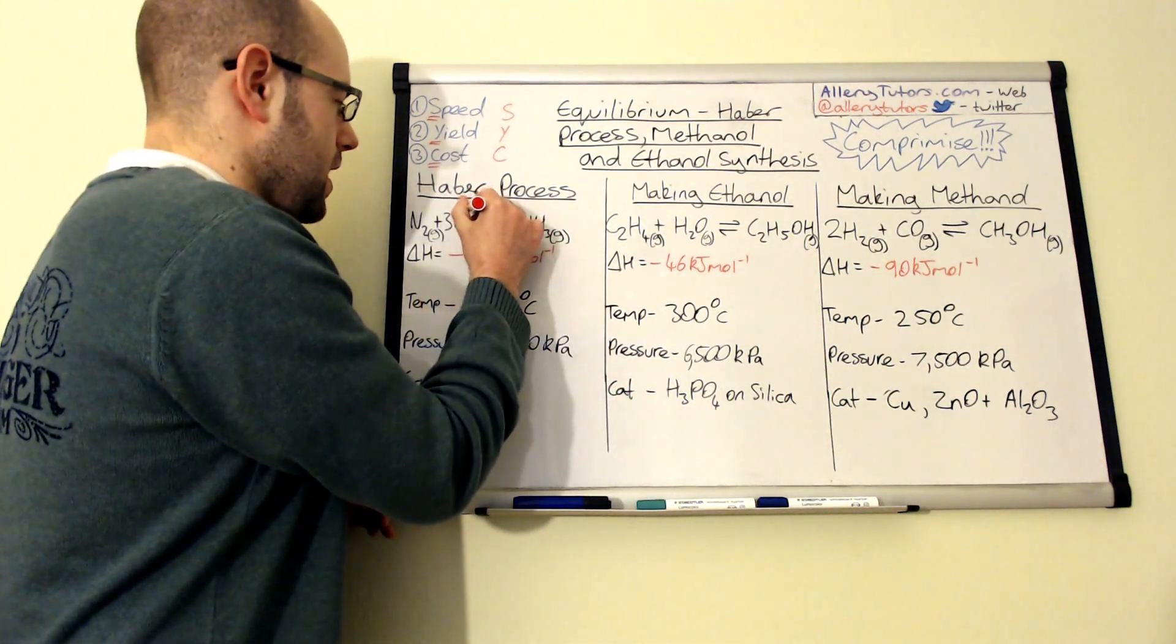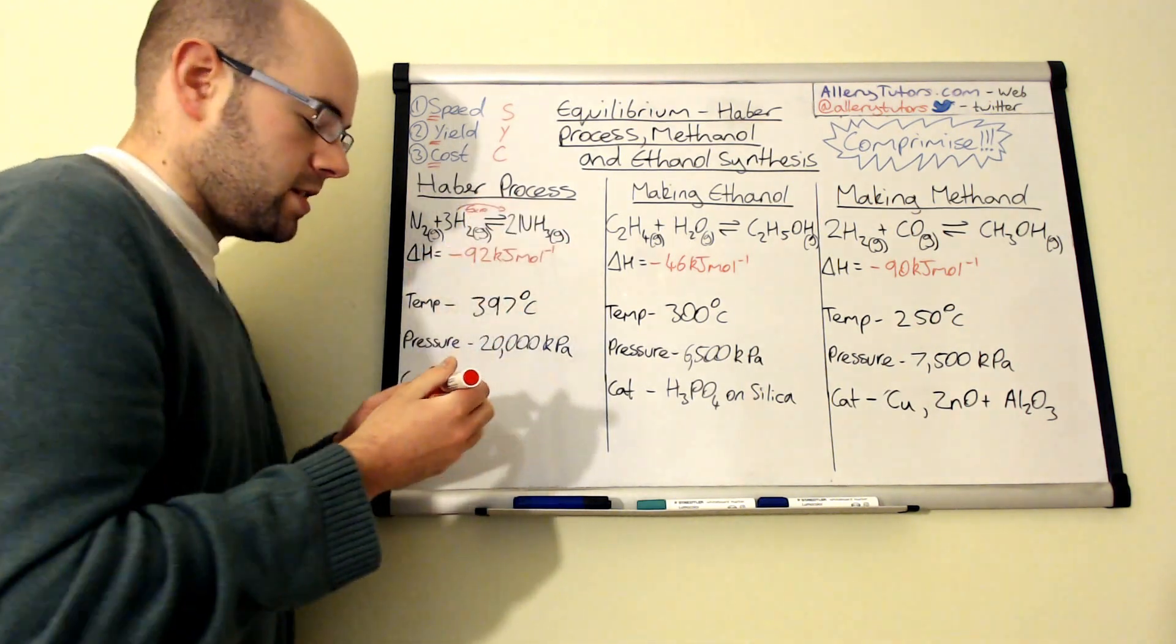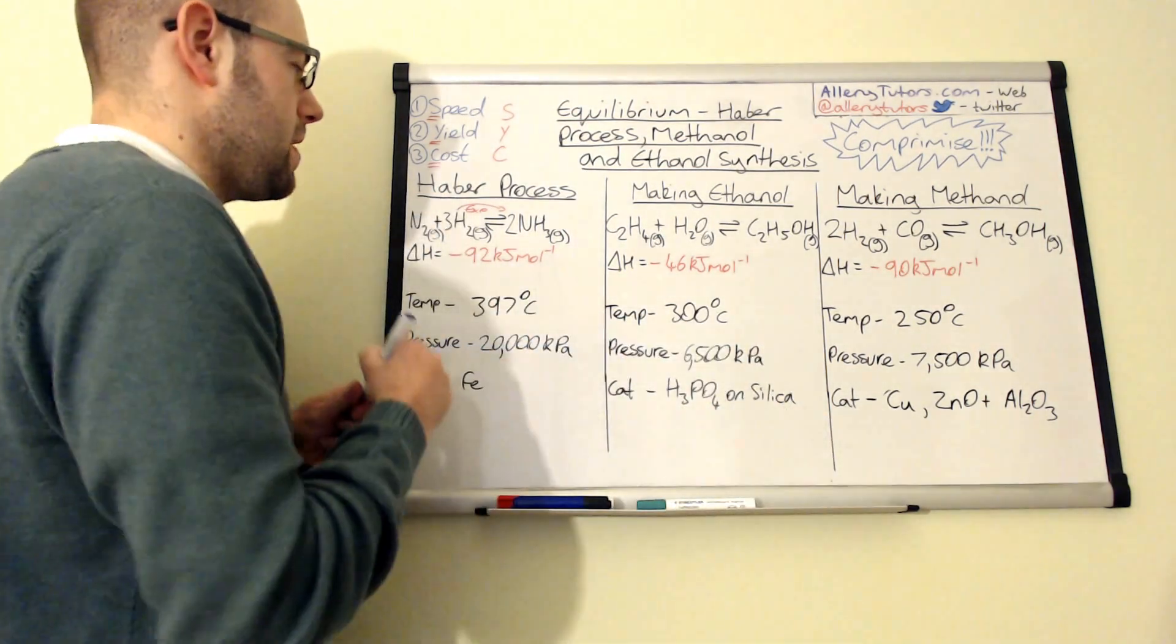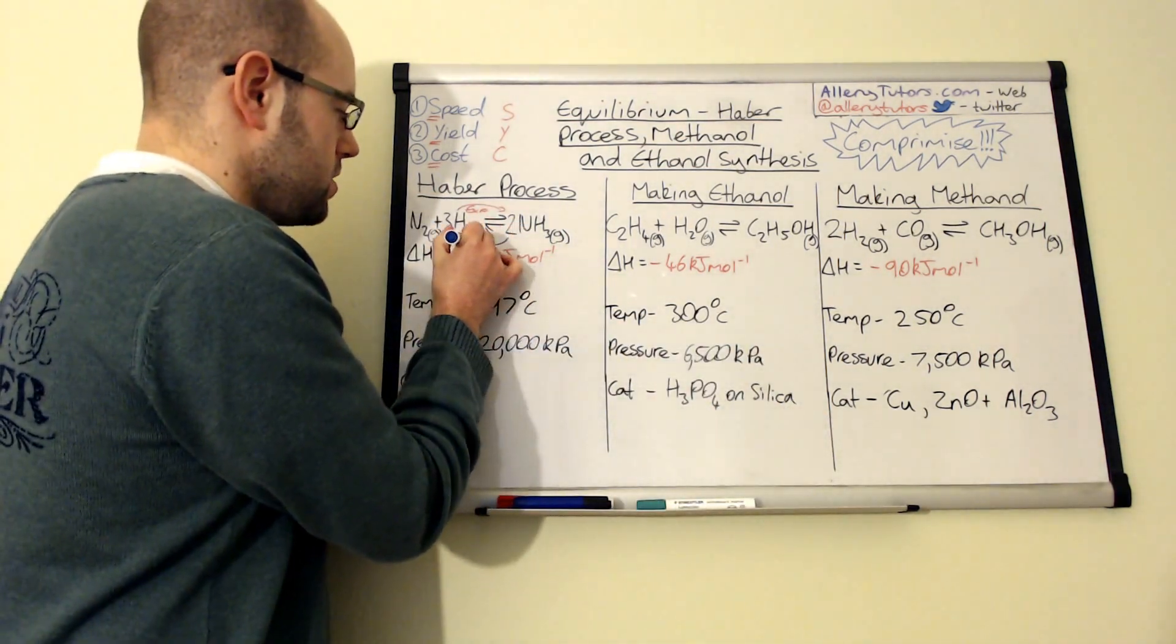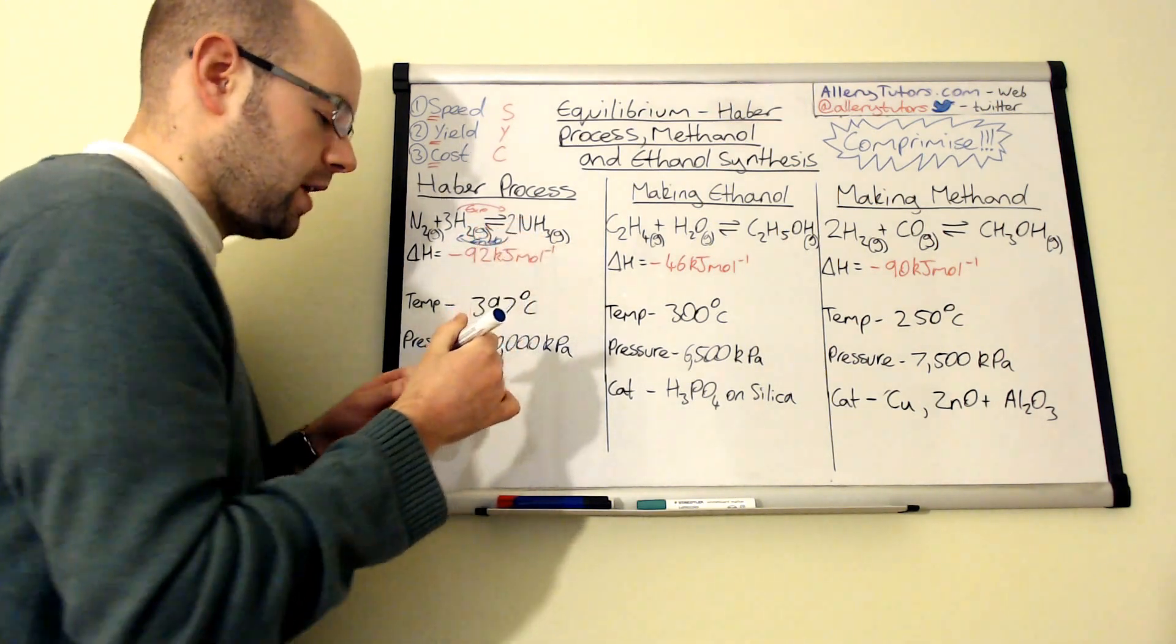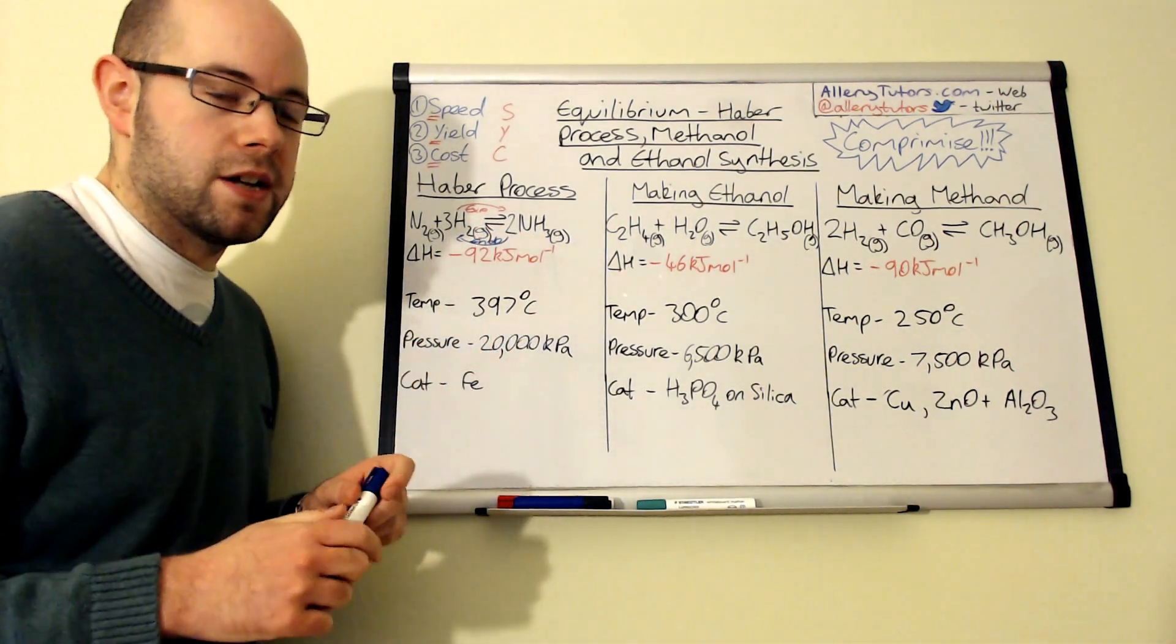This is minus 92 kilojoules per mole. So if it's exothermic in the forward direction, then this means it's actually endothermic in the reverse direction.